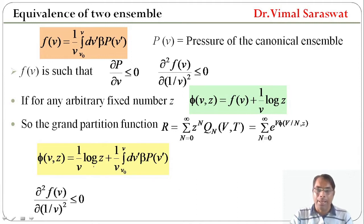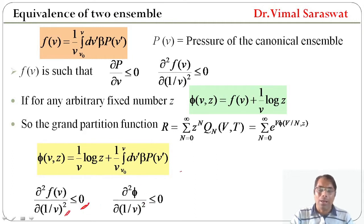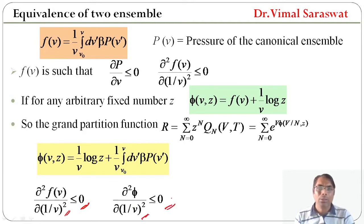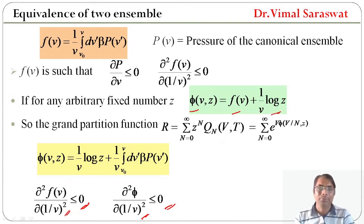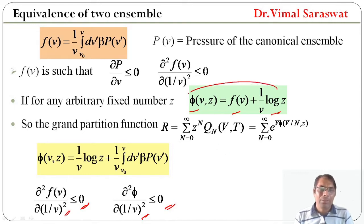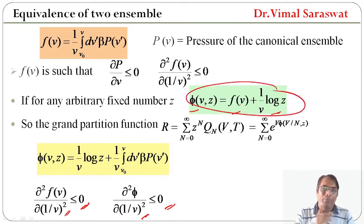Since the second derivative of f(v) with respect to 1/v is less than or equal to 0, and because phi equals f(v) plus 1 over v times log z, if we differentiate this equation twice with respect to 1/v, then the result will be less than or equal to 0.